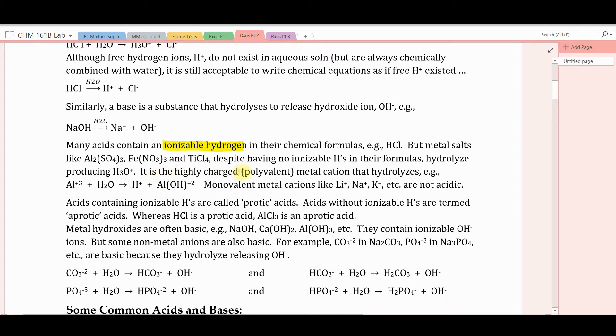It is the polyvalent, that is highly charged, metal cation that does the hydrolysis. For example, aluminum ion in water releases a hydrogen ion. It does so by binding or tying up the hydroxide ion out of water, producing AlOH+2. Notice in this equation that charges are balanced. Plus 3 and 0 is equal to 1 and 2.